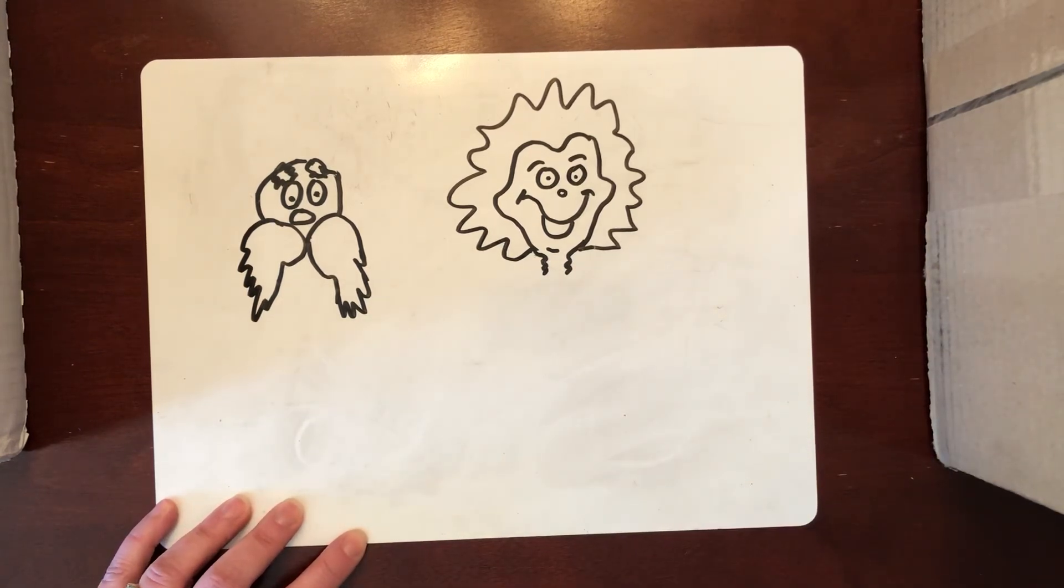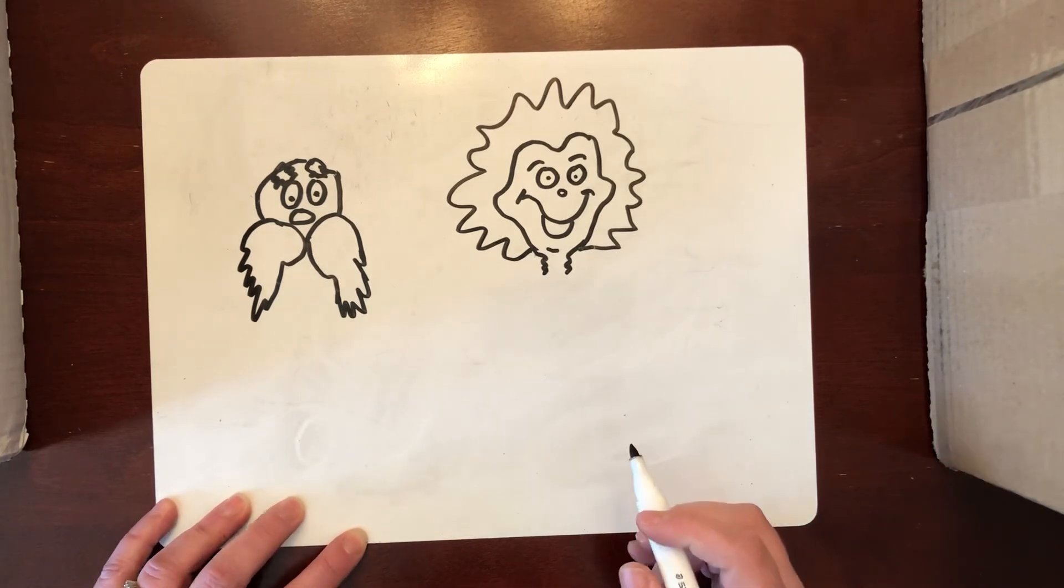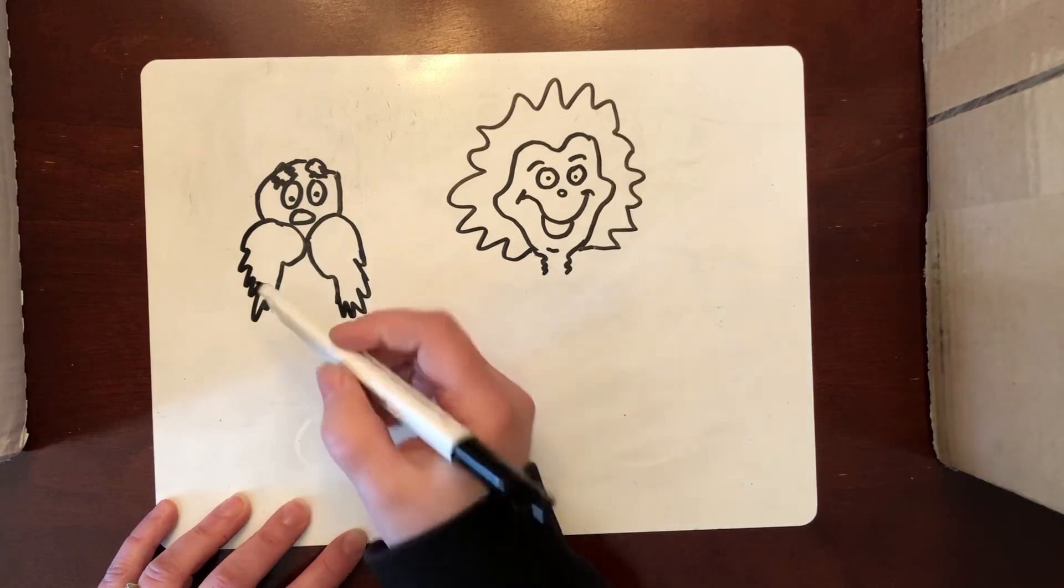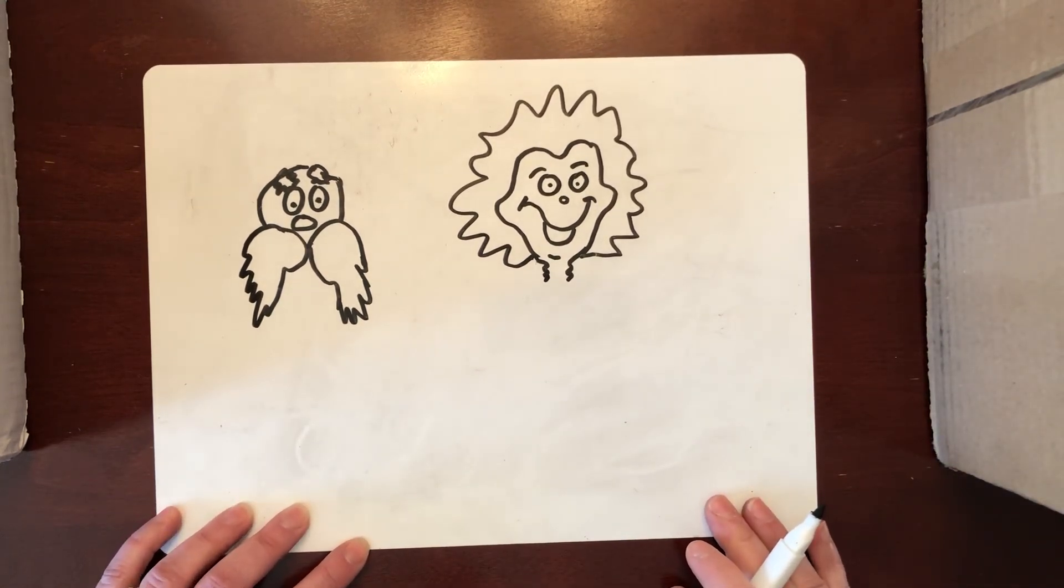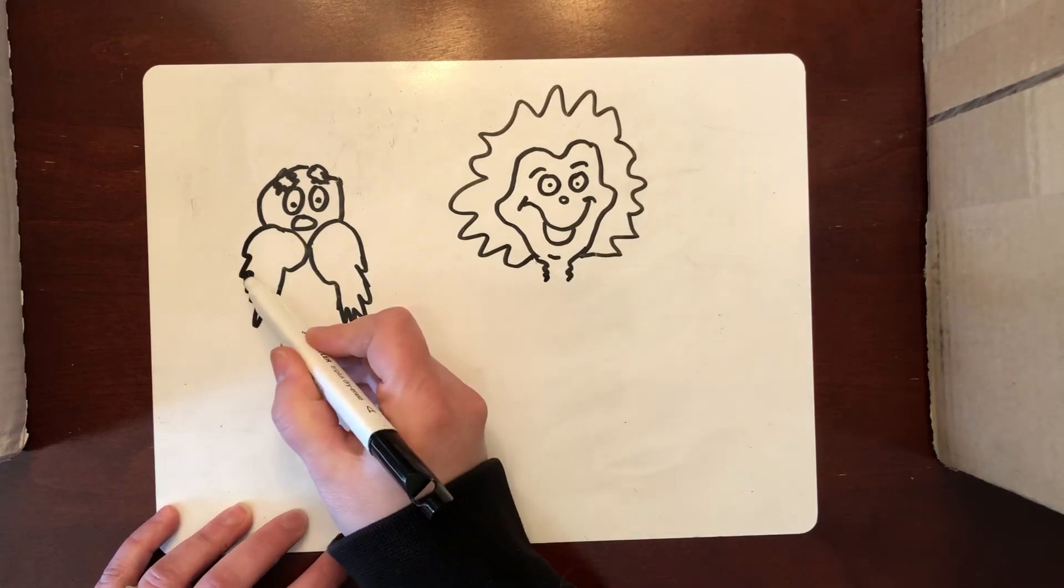Once you've got your head shape and you're happy with your head shape, you're going to add a body and there's all kinds of Seuss body shapes. You can use some of those or you can kind of go with whatever you'd like.